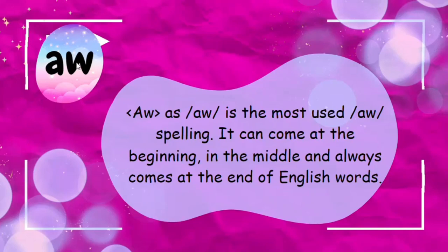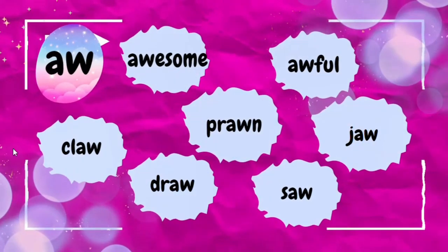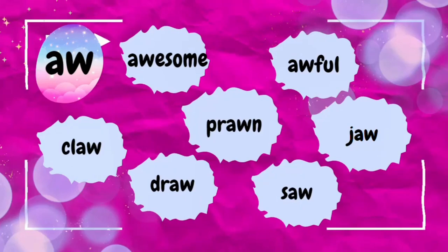Now at last we have AW. AW is the most used AW spelling. It can come at the beginning, in the middle, and always comes at the end of English words. For example: awesome, awful, claw, prawn, jaw, saw, and draw. There are many more words — you can find them and make your own word list. If you want to download the word list from my website, the link is in the description box.